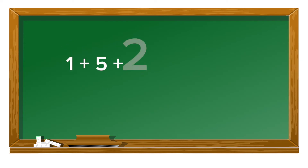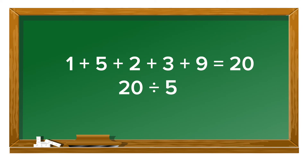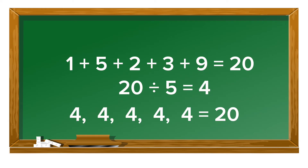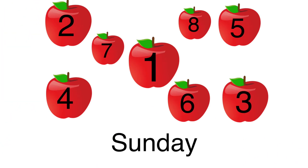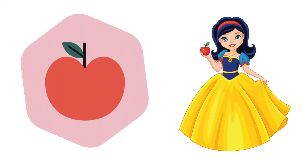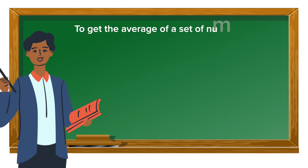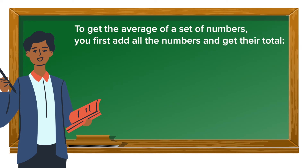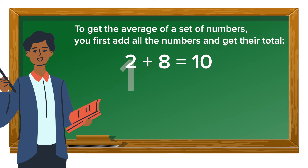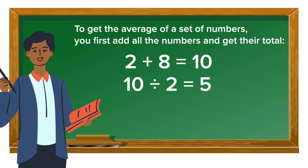In our example, this was the set of numbers. We added up those numbers and got twenty. We took the total twenty and divided it by five because there are five numbers. Now let's look at another example. Let's suppose a person ate two apples on Saturday and eight apples on Sunday. We want to know the average amount of apples she ate per day over the weekend. Two plus eight equals ten. Once you have the total, you divide it by how many numbers there are — in this case, two numbers — so we divide ten by two. Average is the answer you get when you take the total of a set of numbers and divide that total by how many numbers there are.